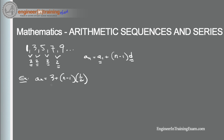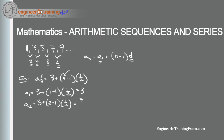All we need to do is plug in the term number we want. So term 1 is a_1, term 2 is a_2, and the n value becomes 1, 2, or 3 on both sides of the equation. So a_1 = 3 + (1 - 1)(1/2) = 3, and a_2 = 3 + (2 - 1)(1/2) = 3.5, and a_3 = 3 + (3 - 1)(1/2) = 4.